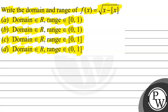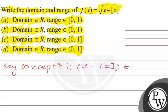So, here what will be the domain and range? f(x) is the square root of x minus greatest integer function of x. Firstly, I will tell you the key concept, and the key concept will help you to solve this question. So the first key concept is that we know x minus greatest integer function of x belongs to the semi-close interval [0,1).